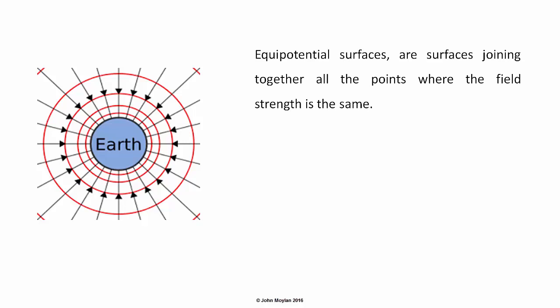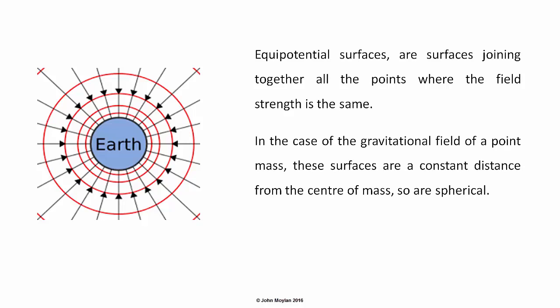Equipotential surfaces are surfaces joining together all of the points where the field strength is the same. So all of those points where the field lines are a particular distance apart can be joined together with an equipotential surface. In the diagram, these are shown as circles surrounding the mass in the center, which is labeled as the Earth. But they are in fact spheres which surround completely the point mass at a constant distance from the point mass.